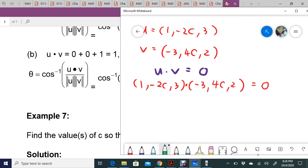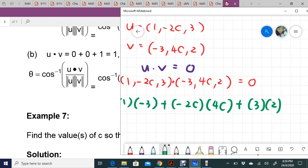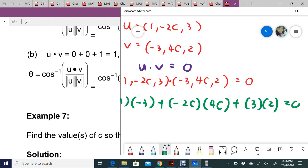So after that, what you need to do: 1 times negative 3, plus negative 2c times 4c, plus 3 times 2 equals 0.